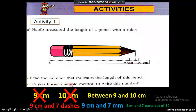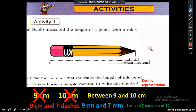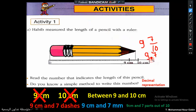Do you know a simple method to write this number? Yes — today we will learn decimal representation. How can I express the length of the pencil as a decimal number? The number is nine and seven tenths, meaning nine centimeters and seven parts out of ten parts. To write it as a decimal number, we write nine, then put point seven. So it becomes 9.7. The seven here means seven decimal parts, meaning seven parts out of ten.